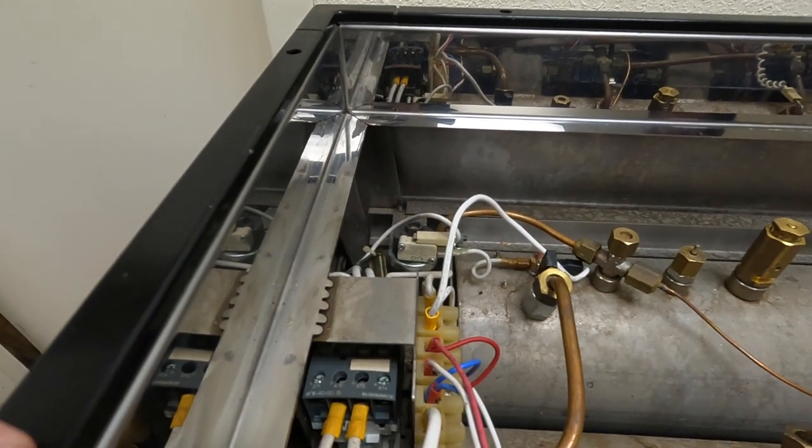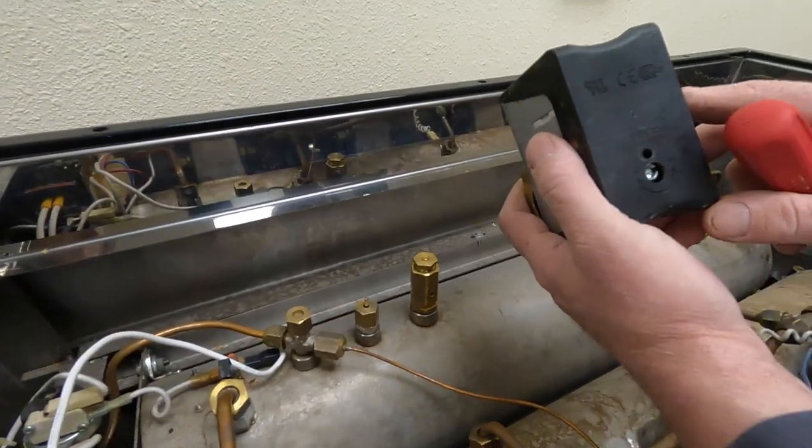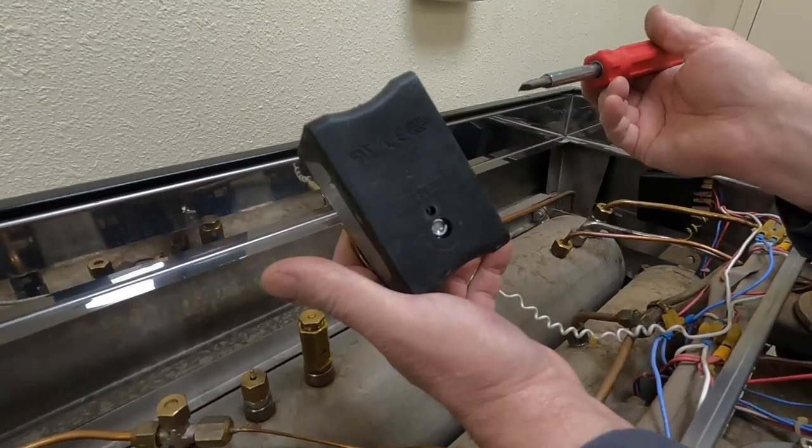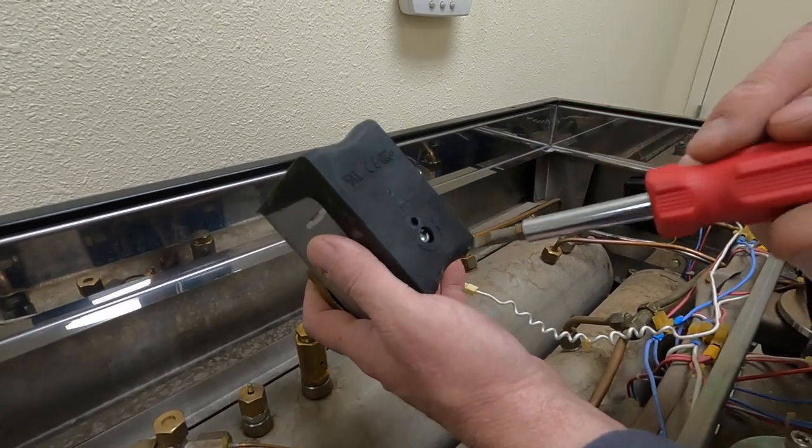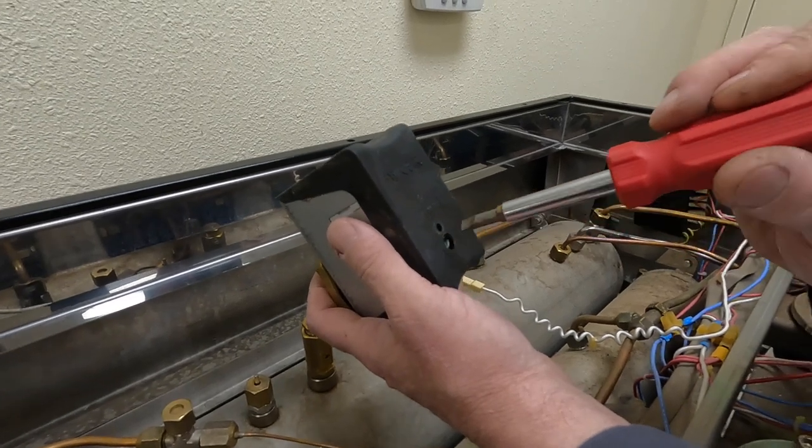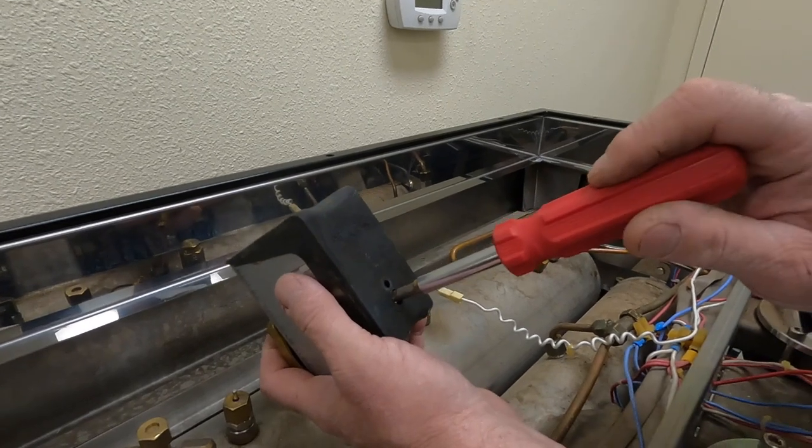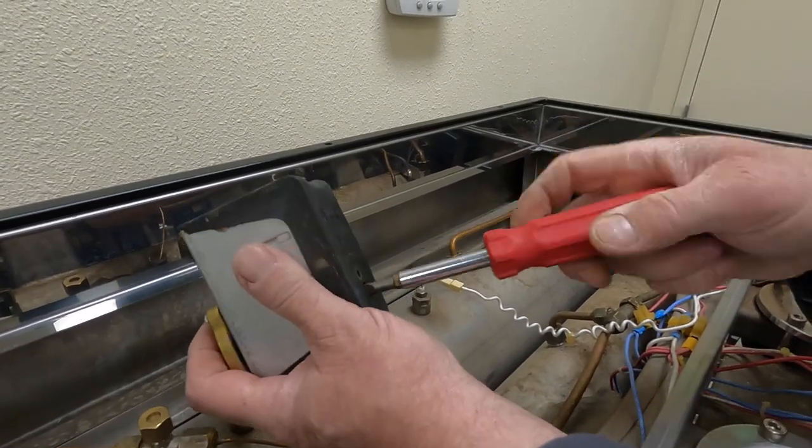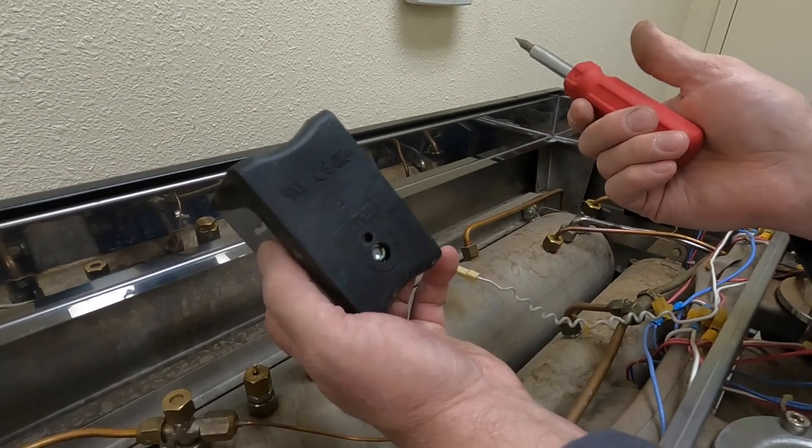If you have a really old La Marzocco, you may have this type of pressure switch. In that case, this is the opposite. To increase is going to be counterclockwise. On these old style switches, you're going to do full turn increments to do a minor adjustment.